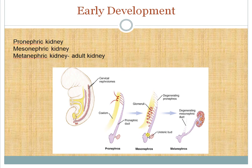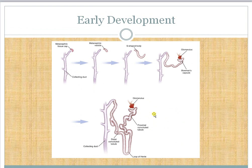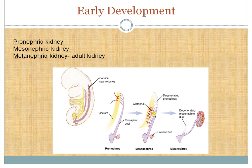The lateral end of the mesonephric tubules forms a tube called the mesonephric duct, whose lower end opens into the cloaca — represented in adults by the trigone of the bladder. In the presence of testosterone, the mesonephric duct becomes the efferent ducts, epididymis, vas deferens, seminal vesicles, and the prostate. In females, without testosterone, the mesonephric duct simply involutes.